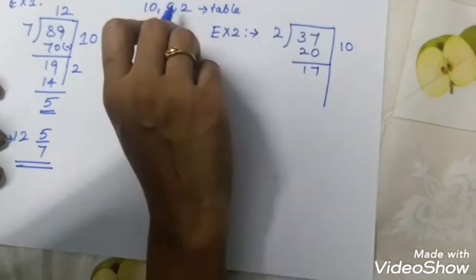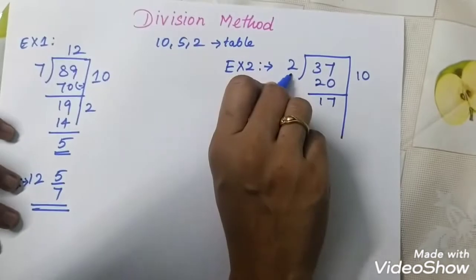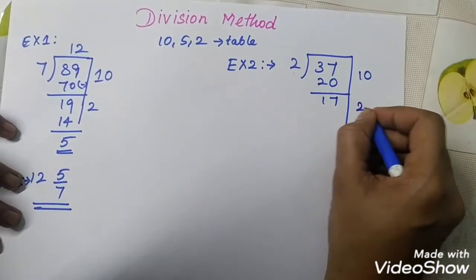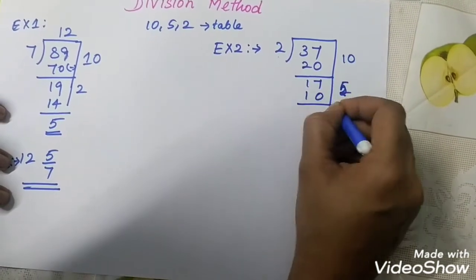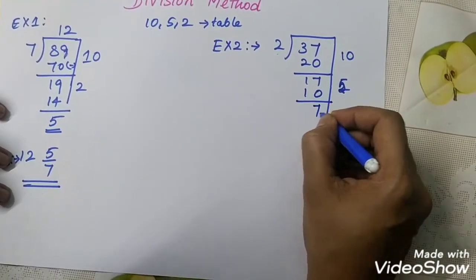So, you can go for, take 5. 5, 2's are 10. Sorry. 5, 2's are 10. You can go and subtract 7.